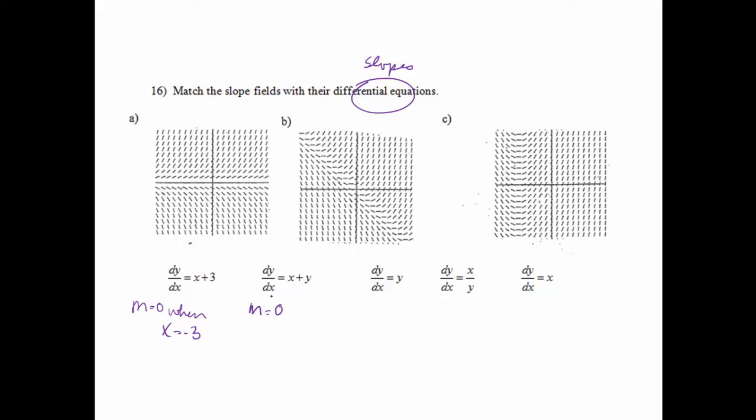On this next one, my slope will be 0 when x and y are opposites. So that would be examples like (1, -1), (-1, 1), (-2, 2), (2, -2). So all those points is when we would see slopes of 0.